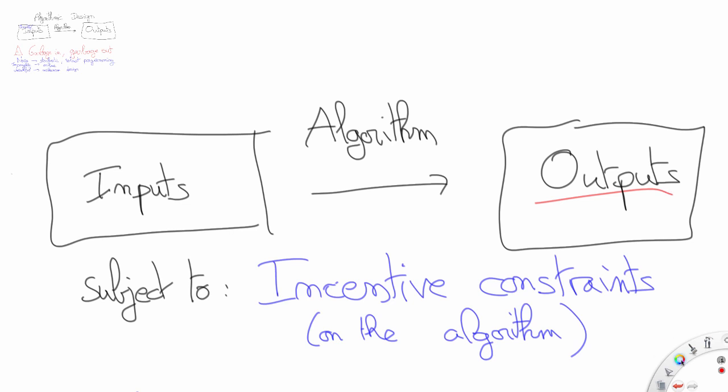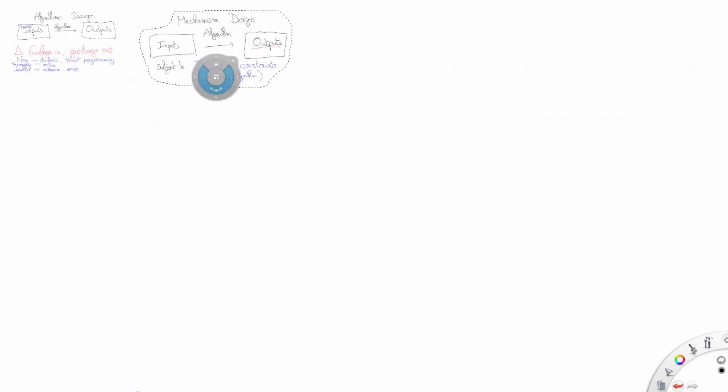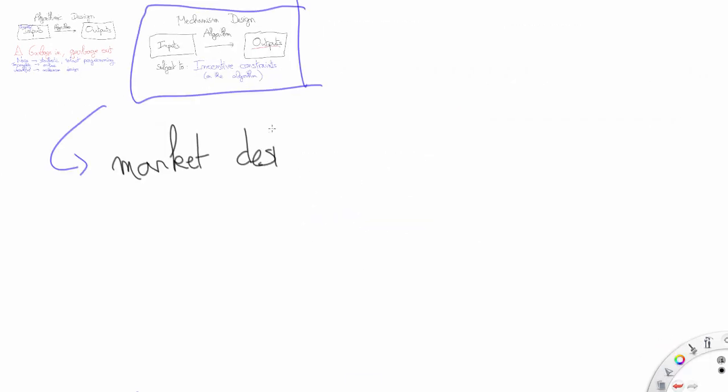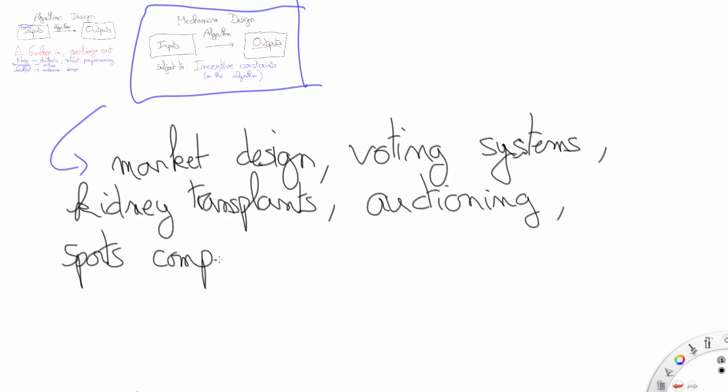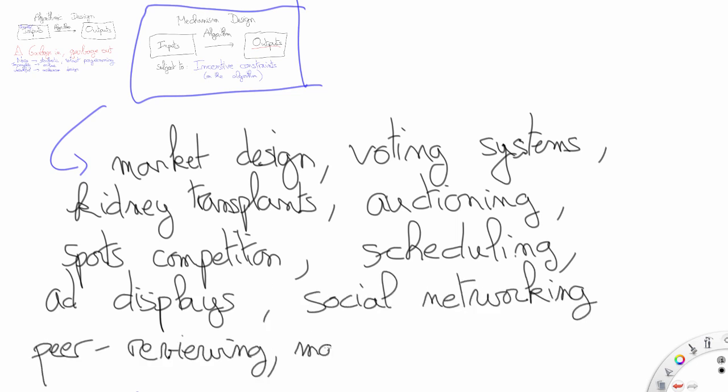Because the principles I've just given here are very general, applications of mechanism design span throughout plenty of areas. Evidently, when interactions between agents play a key role in determining outcomes, the tools of mechanism design are needed to make these interactions as productive as possible. Examples include market design, voting systems, kidney transplants, auctioning, sports competitions, scheduling, ad displays, social networking, even peer reviewing, matching problems, and probably many other areas I have not thought about yet.